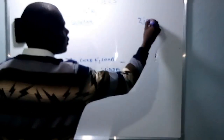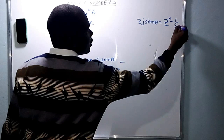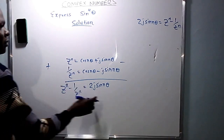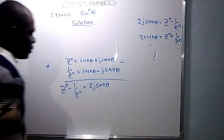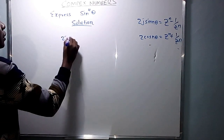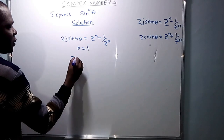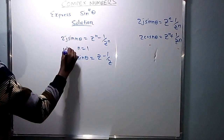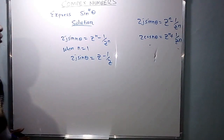Because cos n theta minus cos n theta is 0. So we can now see that 2j sine n theta equals z^n minus 1 over z^n. When n equals 1, we get 2j sine theta equals z minus 1 over z.